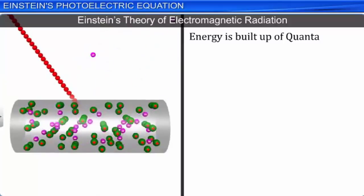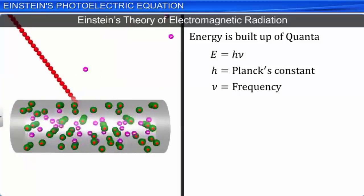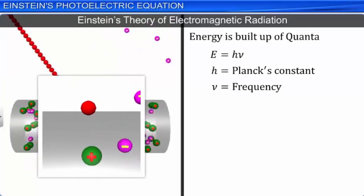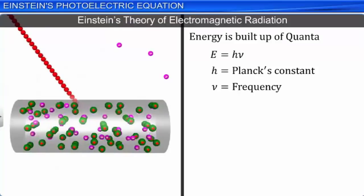Each photon has energy E equal to hν, where h is Planck's constant and ν is the frequency of the incident radiation. When photons are incident on the metal surface, the electron of the metal absorbs energy from the photon. The minimum energy required for the electron to just escape from the metal surface is called the work function, φ₀. If the energy absorbed by the electron is greater than the work function of the metal φ₀, the electron is ejected with maximum kinetic energy K_max equal to E minus φ₀, where E is the energy of the incident photon.